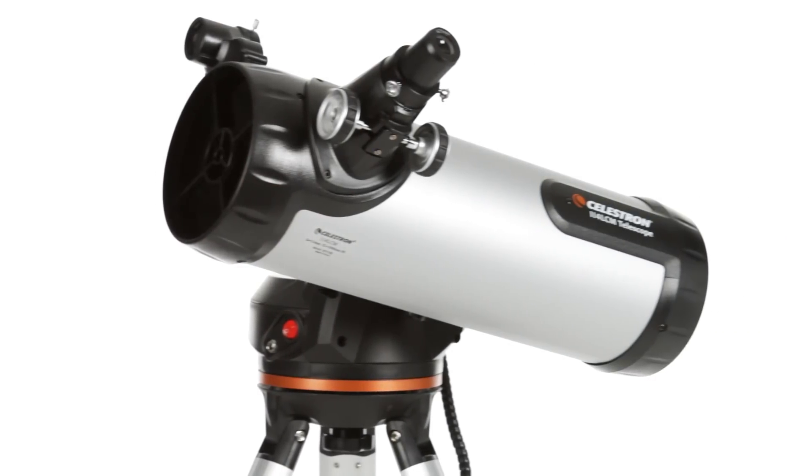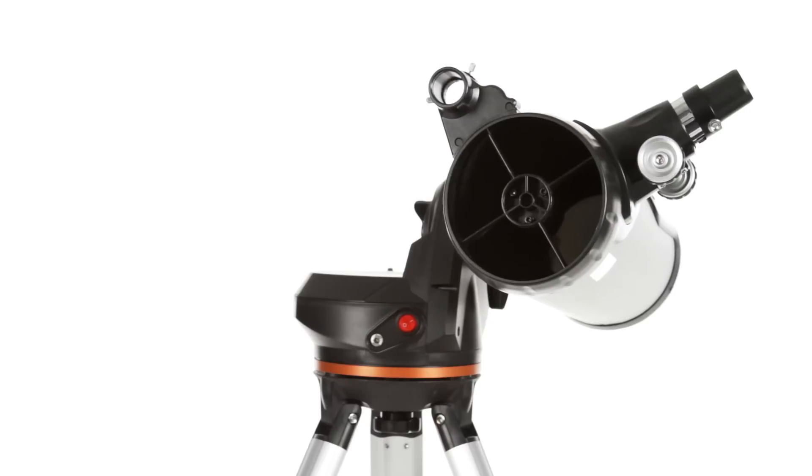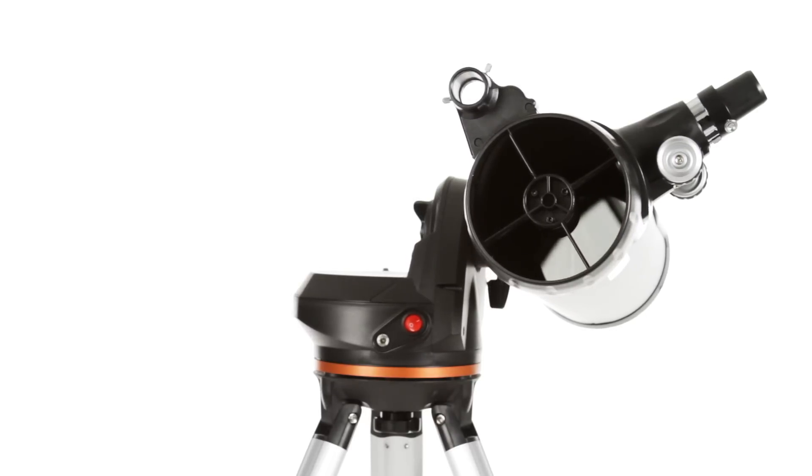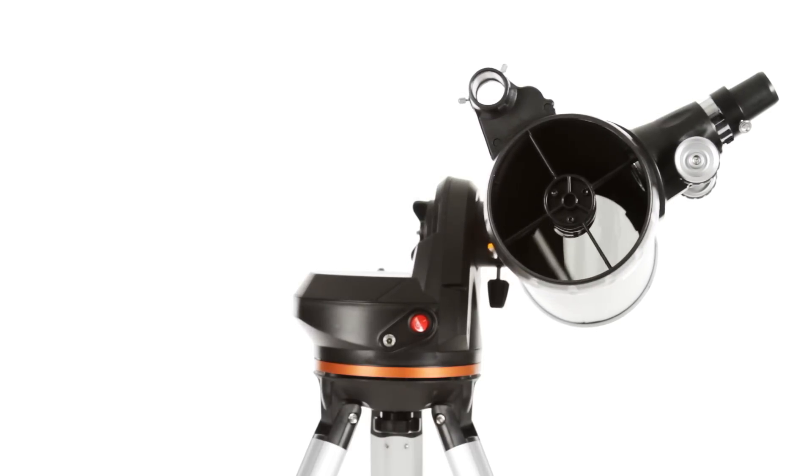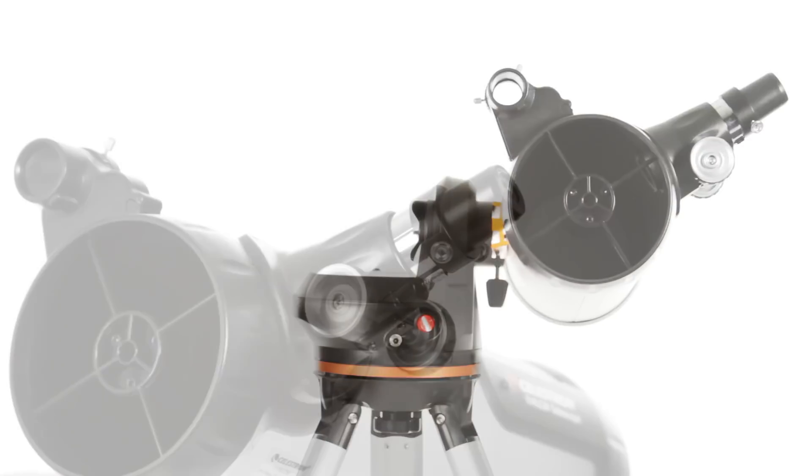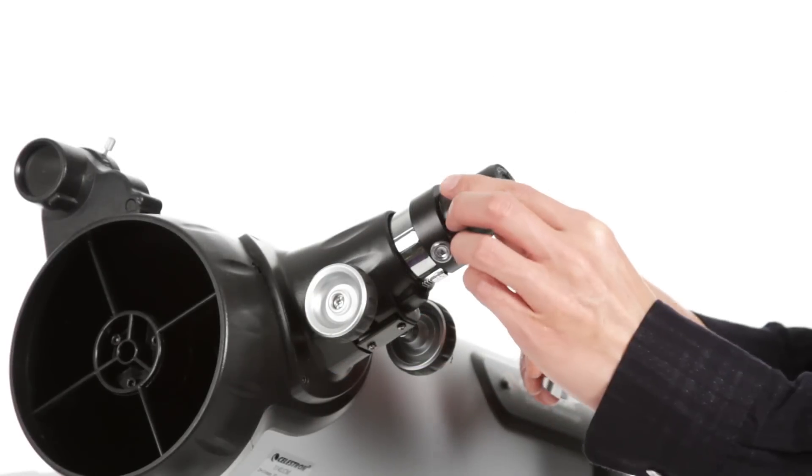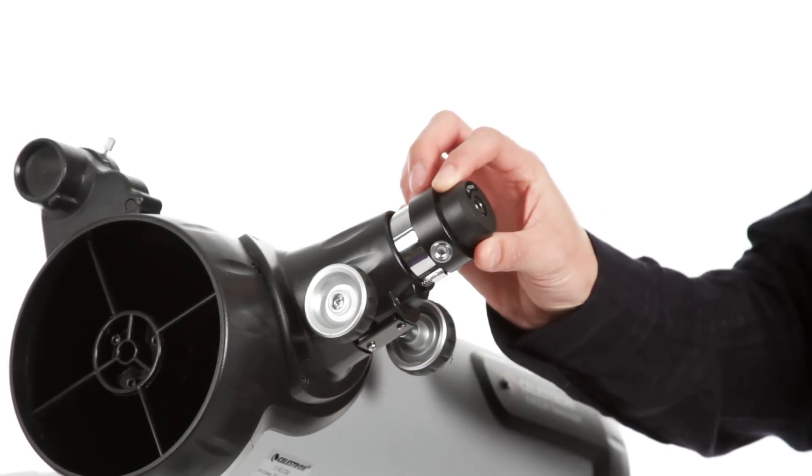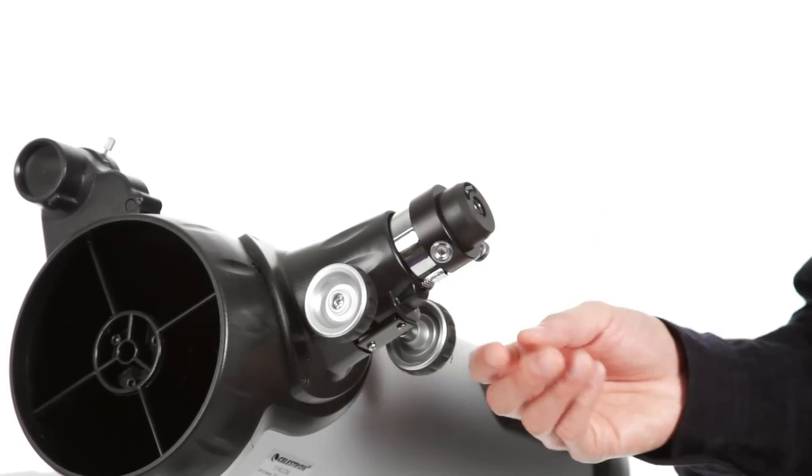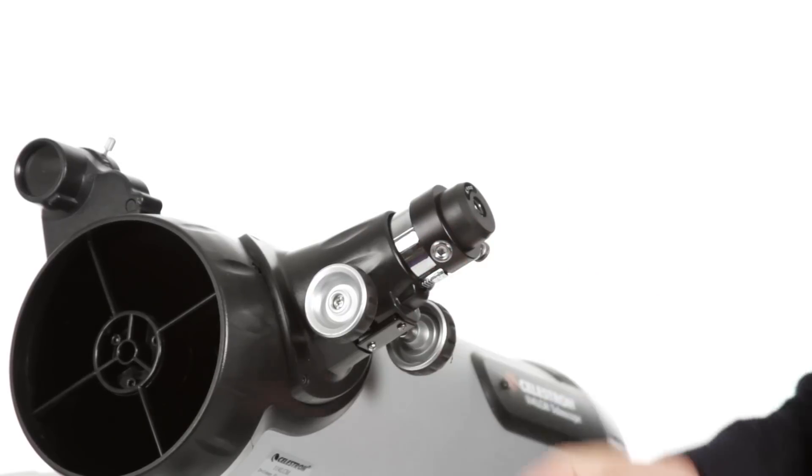With the largest optical tube in the LCM family, the 114 offers a 4.5-inch primary mirror for lots of light-gathering ability. Combine it with the included low and high-power eyepieces, and you'll enjoy detailed views of the rings of Saturn, the gas clouds of the Orion Nebula, and hundreds of other objects.